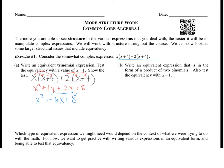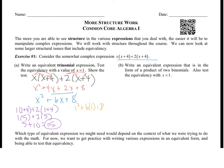Now we're going to look at the test with X equals 1. Using our original expression first: 1 times 1 plus 4, plus 2 times 1 plus 4. So 1 times 5 plus 2 times 5 becomes 5 plus 10, which is 15. Now we test the equivalency by plugging 1 in for X in the new expression: 1 squared plus 6 times 1 plus 8 gives us 1 plus 6 plus 8, so 7 plus 8 equals 15. Our equivalency works — both expressions equal 15.